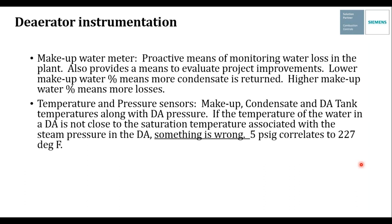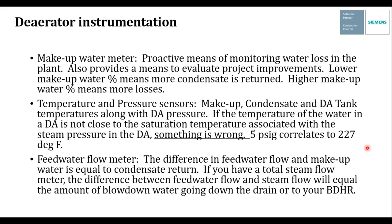Highly recommended: replace mechanical gauges with temperature and pressure sensors so that information can be fed back to a control panel and sent to your building automation system. A feed water flow meter is something many plants don't use, but with modern technology it's much easier to install. The difference between feed water flow and makeup water flow equals your condensate return. If you also have a total steam flow meter, the difference between feed water flow and steam flow equals your blowdown — very important for evaluating whether a blowdown heat recovery system is economically viable.